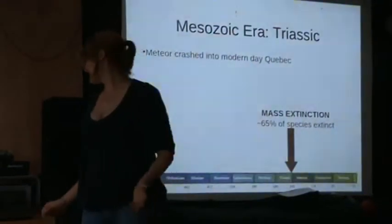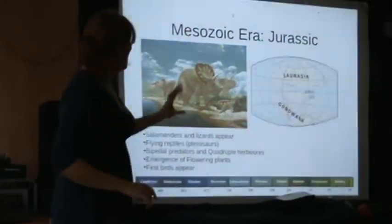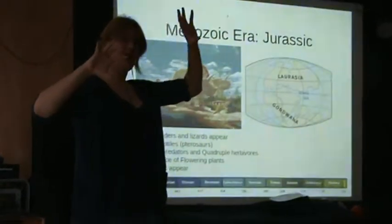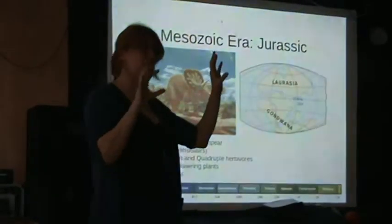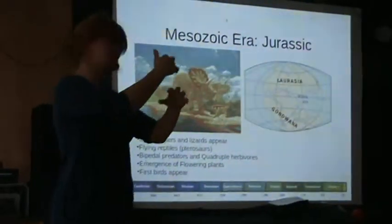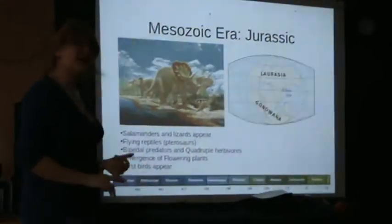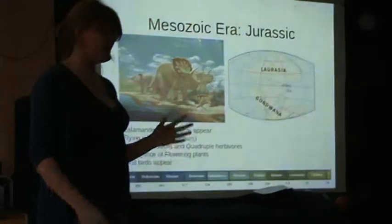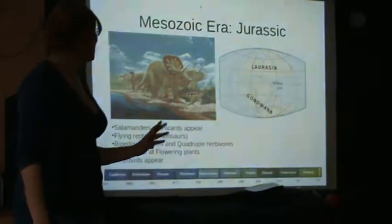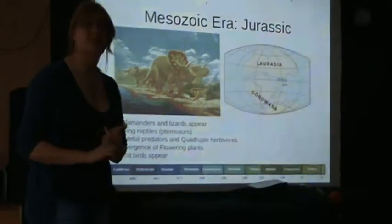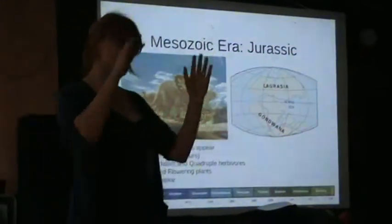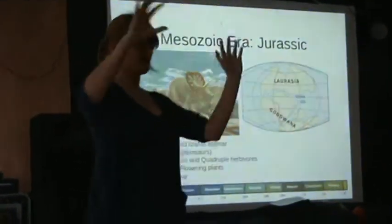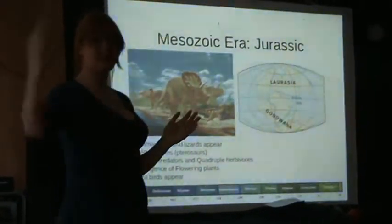Moving into the Jurassic period, life changes again. On the tectonic plate structure, the continents have now moved into two obvious forms: Laurasia in the north and Gondwana in the south, still somewhat connected. We see salamanders and lizards emerging, and we get our first flying reptiles — the pterosaurs. We also see the evolution of bipedal predators and quadrupedal herbivores, as dinosaurs really started to take off. We also see the emergence of the very first flowering plants, and from dinosaurs we get the bird lineage branching off — birds being the only surviving species of that entire dinosaur lineage.